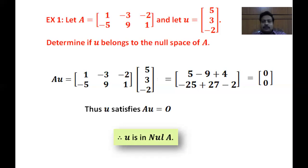This is a very simple problem, but we need to interpret the results in real-world terms. Mathematically, it is just a matrix multiplication to check whether we get a zero matrix or not. Let us interpret this problem for the current COVID situation.